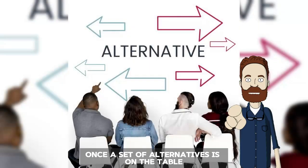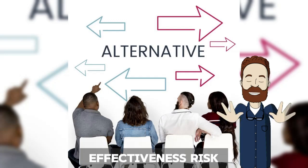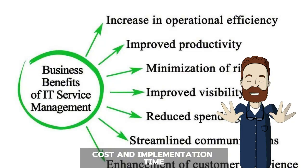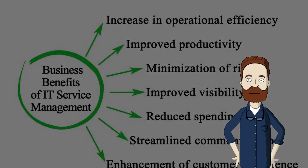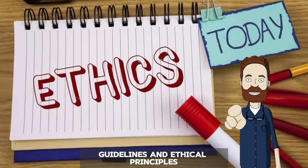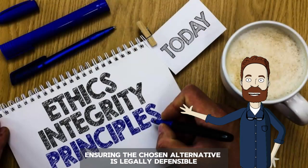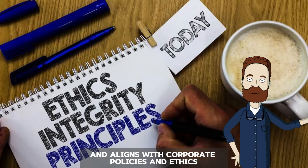Once a set of alternatives is on the table, the group must evaluate them based on various criteria — effectiveness, risk, cost, and implementation time. It's crucial to consider laws, guidelines, and ethical principles, ensuring the chosen alternative is legally defensible and aligns with corporate policies and ethics.